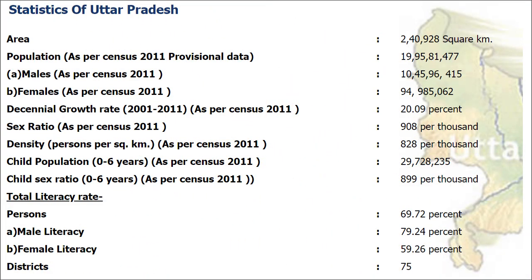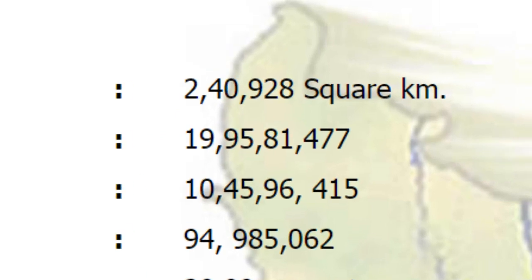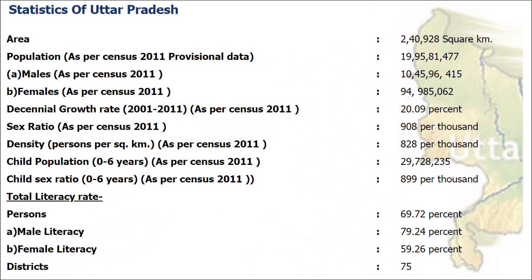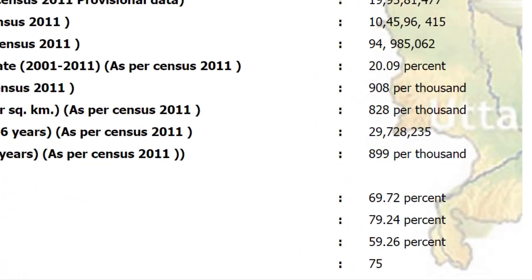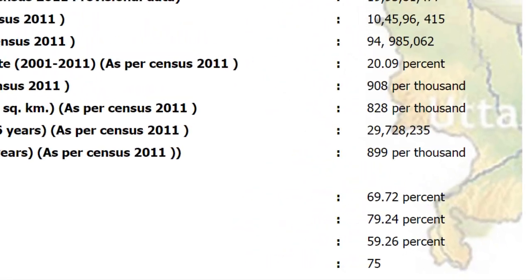The area of Uttar Pradesh is 2,40,928 km² and the population is 19,95,81,477. There are 75 districts in Uttar Pradesh.